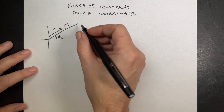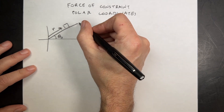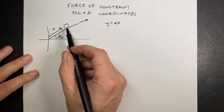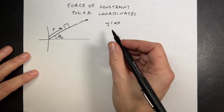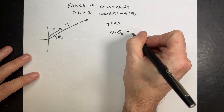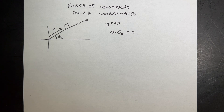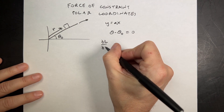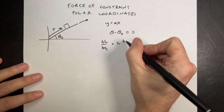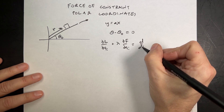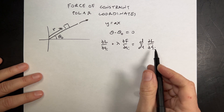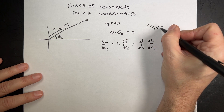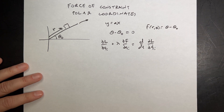In Cartesian coordinates, I can say something like y equals ax as the constraint. But in polar coordinates, I find the location as r and theta, and theta is some constant value. So the constraint here would be theta minus theta-zero equals zero. To use Lagrange multipliers to find the equation of constraint, it looks like: the partial of L with respect to qi, plus lambda times the partial of f with respect to qi, equals the time derivative of the partial of L with respect to qi-dot, where f of r and theta equals theta minus theta-naught.